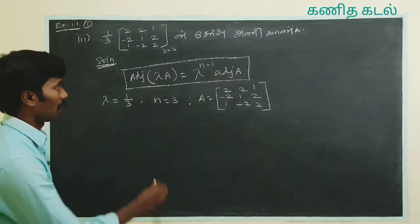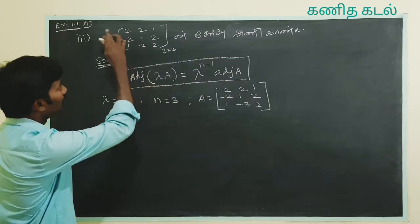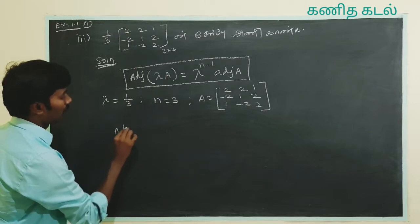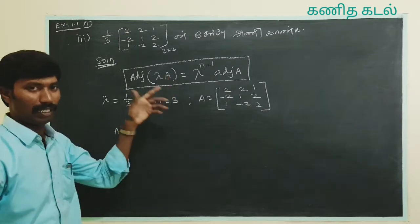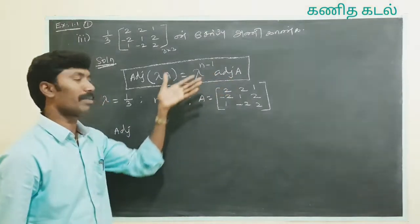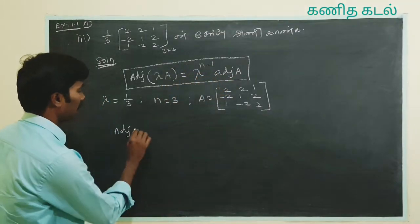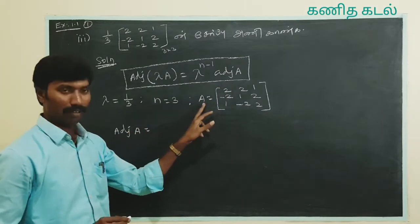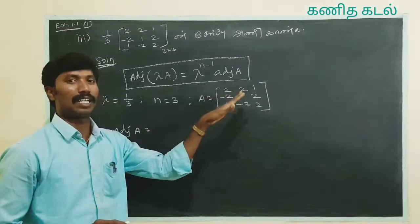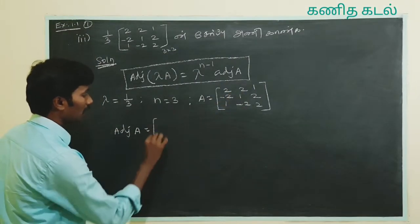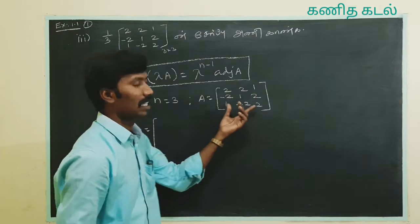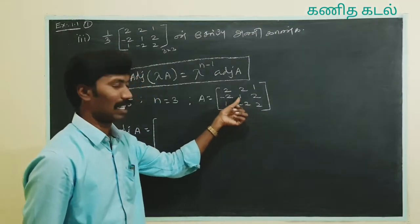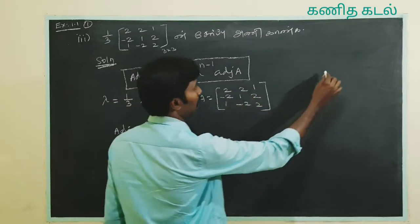Therefore, adjoint of lambda A — therefore adjoint of this matrix. We can see how to compute it. Therefore adjoint of lambda A, we can substitute it. Adjoint A is equal to cofactor transpose. Adjoint A is equal to cofactor transpose. Now we can do it directly — in a 3x3 matrix, we can compute the adjoint using the central cofactor method.